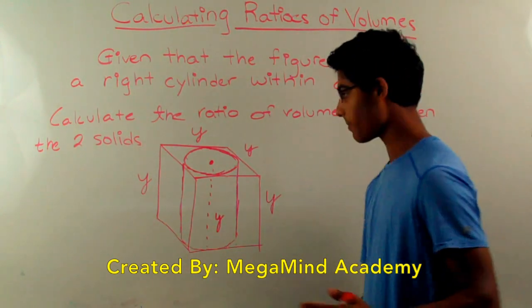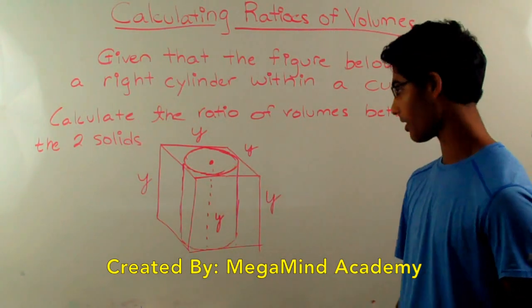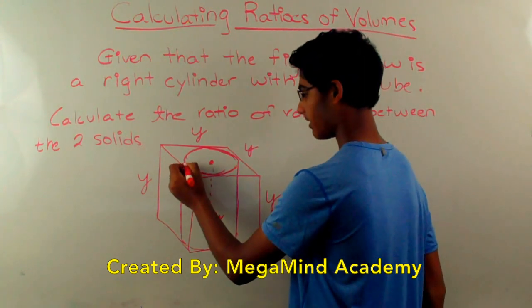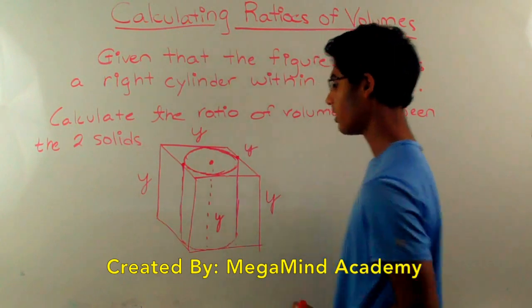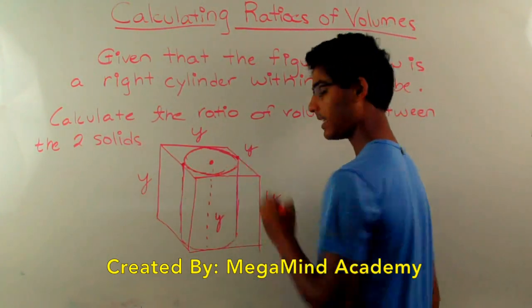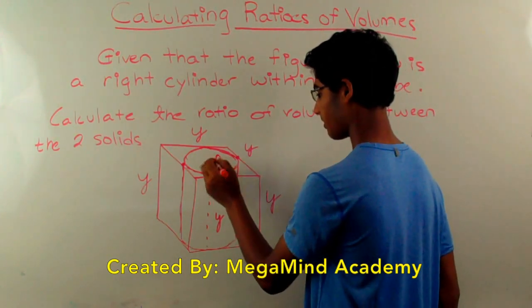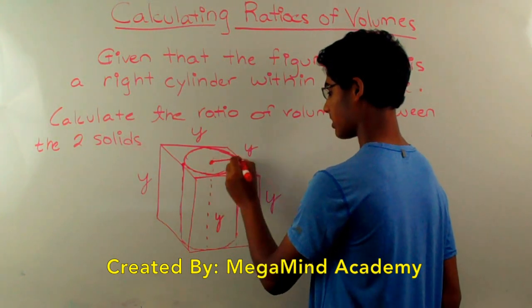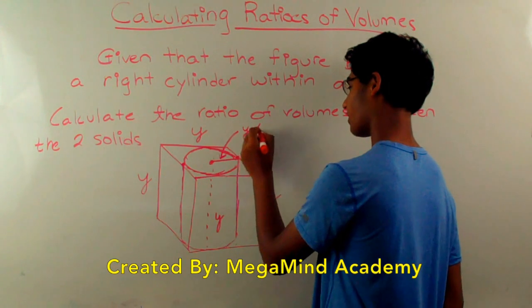Now, we know that the edges of the cylinder are touching the edges of the cube. So here they connect, and here they connect. So that means that the diameter will have to be equal to y, meaning that the radius will be equal to y over 2. Whoops, that was wrong. Let's just say this. This is equal to y over 2.